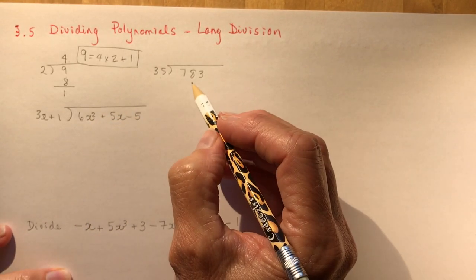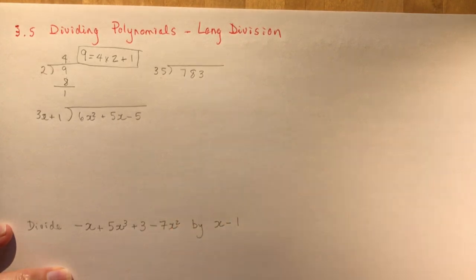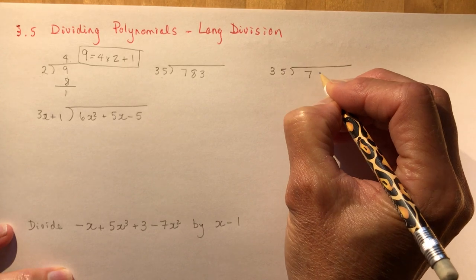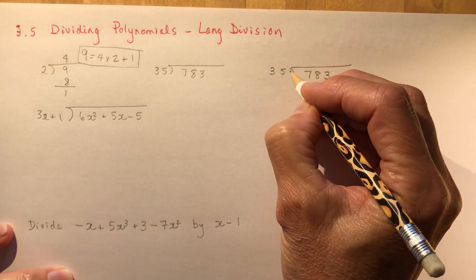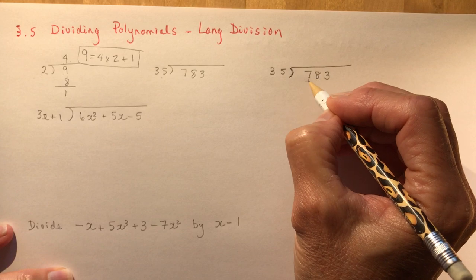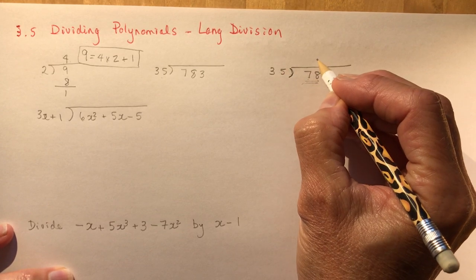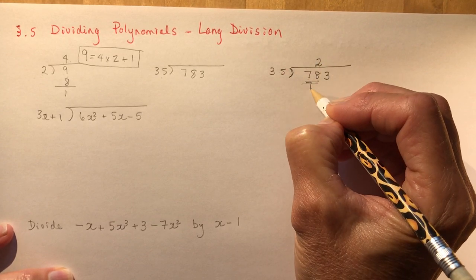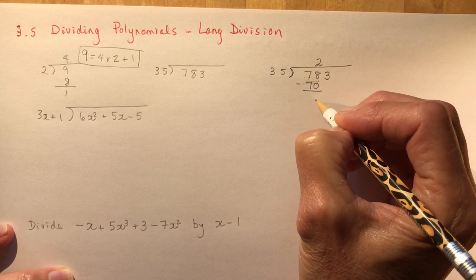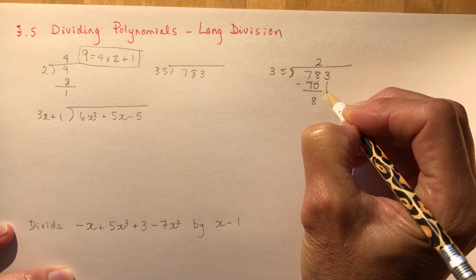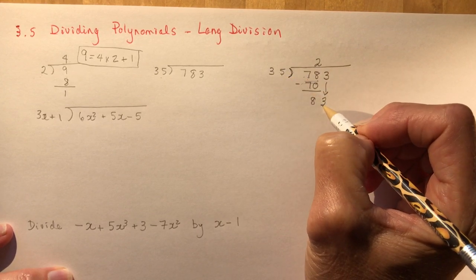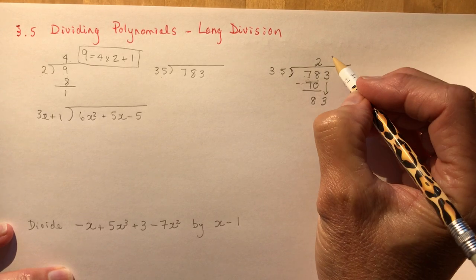Let's do one a little bit harder: 35 into 783. 35 doesn't go into seven, but it goes into 78 — two times, because two times 35 is 70. Subtract and I get eight. Bring down the three, and I ask how many times does 35 go into 83 — it's two again.